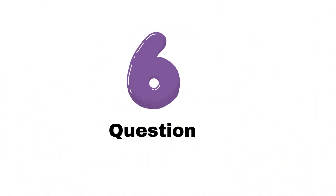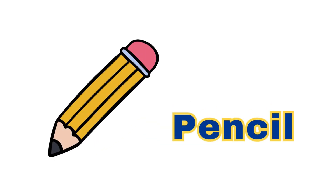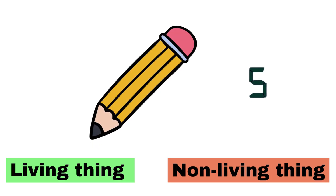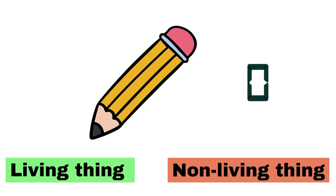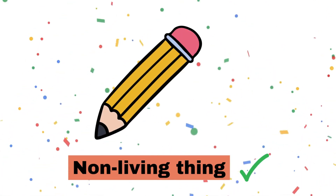Sixth question. What do you see here? Yes, it's a pencil. Is this a living thing or non-living thing? Correct, it's a non-living thing.